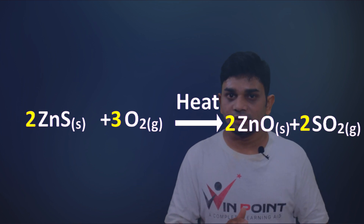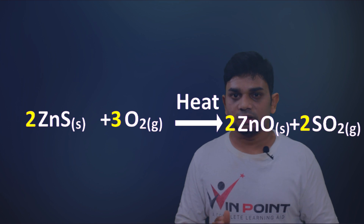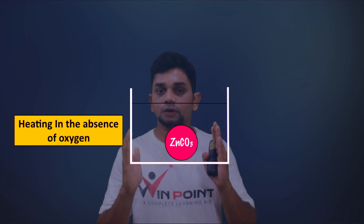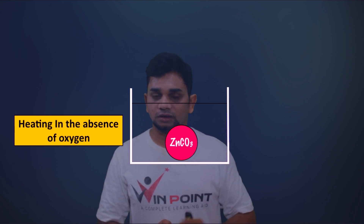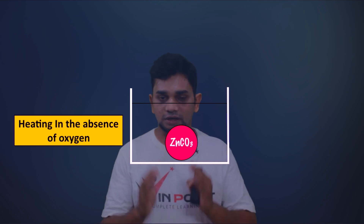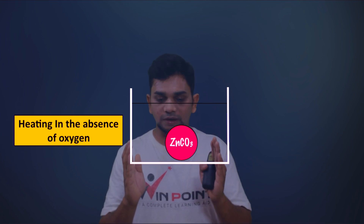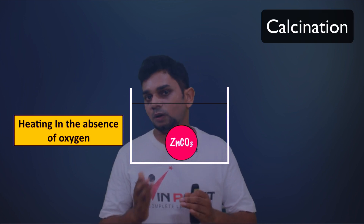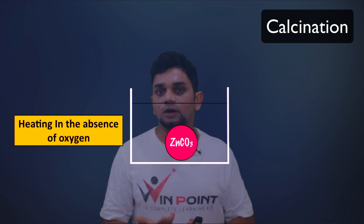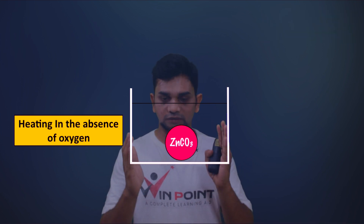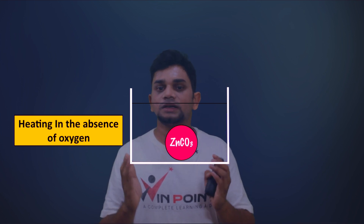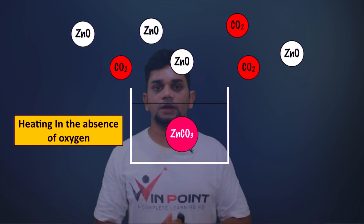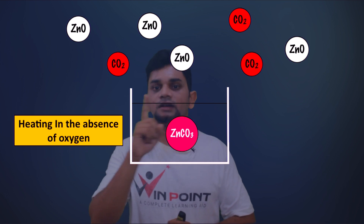If we are taking zinc carbonate, there is a small change in the process. We heat zinc carbonate in the absence of oxygen. When you heat an ore in the absence of oxygen, the process is known as calcination. So this is calcination. When we heat zinc carbonate, we get zinc oxide and carbon dioxide.